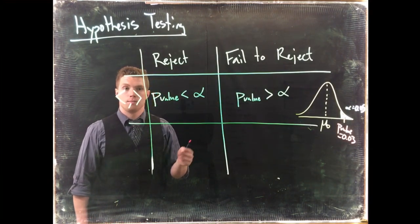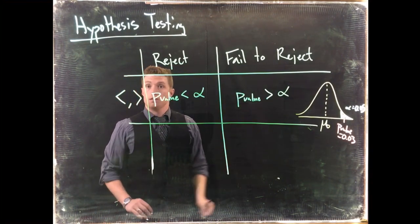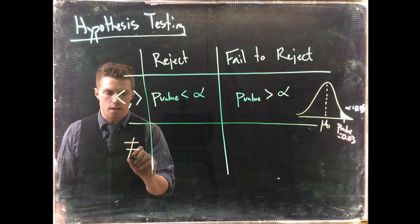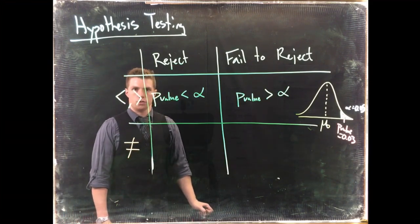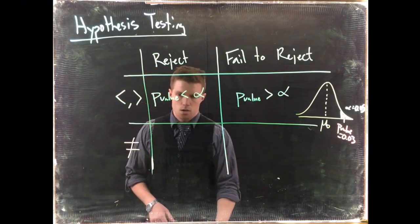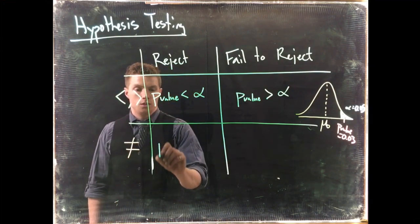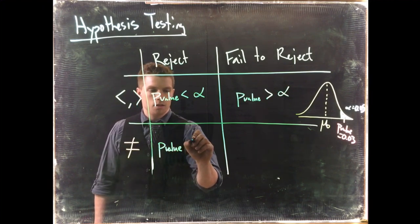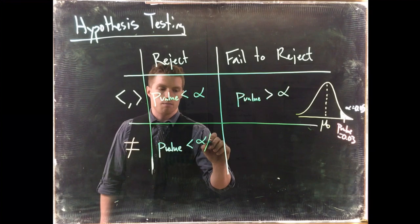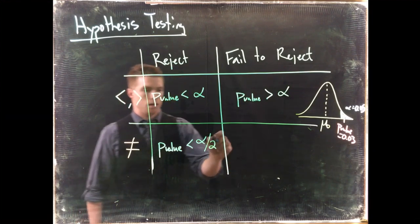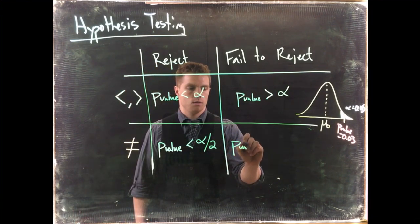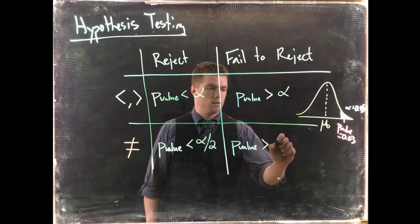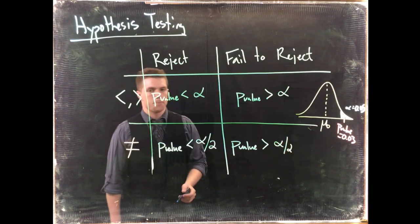It changes just a hair when we say not equals to. Here's the difference: when we say not equals to, we really need to compare the p-value that we get, and that needs to be less than alpha divided by two. Same thing, we fail to reject when the p-value is greater than alpha divided by two.